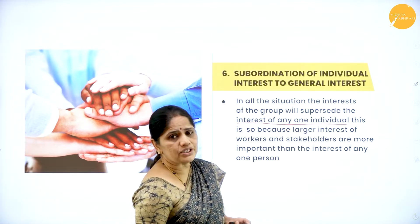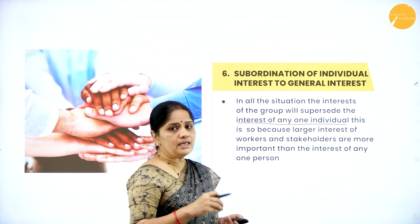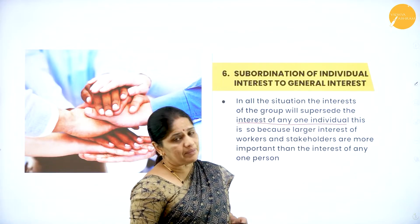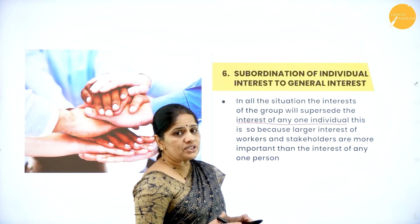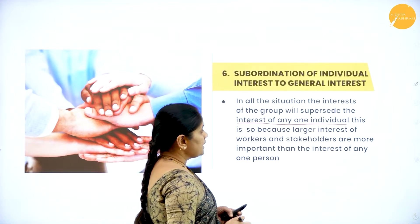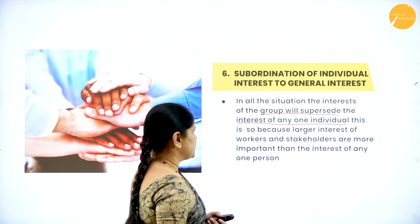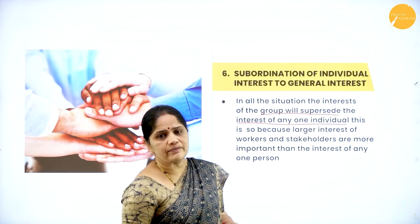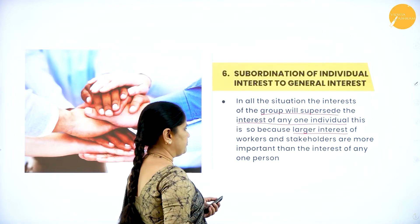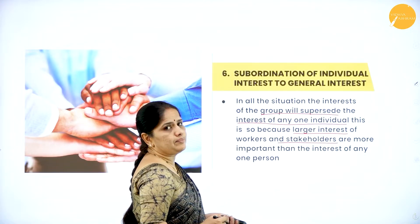For example, consider the remuneration policy of the organization. The company wants to pay at the lowest available competitive cost, whereas the employee wants to get the maximum available in the industry. So there should be a reconciliation of both interests. Subordination of individual interest means the interest of the group will supersede the interest of any one individual.